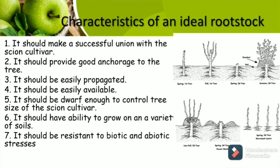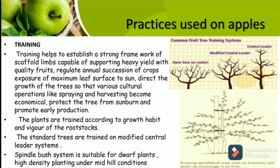The practices used on apple trees include training and pruning. Training helps to establish a strong framework of scaffold limbs capable of supporting heavy yield with quality fruits, regulate annual succession of crops, expose maximum leaf surface area to the sun, and direct the growth of trees so that various cultural operations can be carried out easily. Plants are trained according to the growth habit and vigour of rootstocks. Standard trees are trained on a modified central leader system, and the spindle bush system is suitable for dwarf plants in high-density planting under mid-hill conditions.